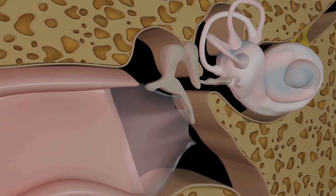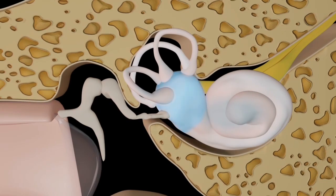Transmission to inner ear. The amplified vibrations travel to the oval window, a membrane-covered opening in the cochlea of the inner ear.